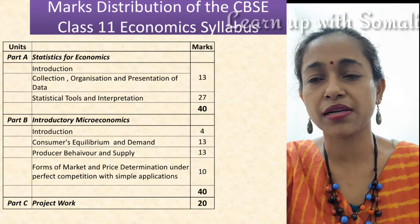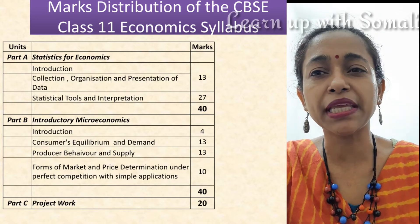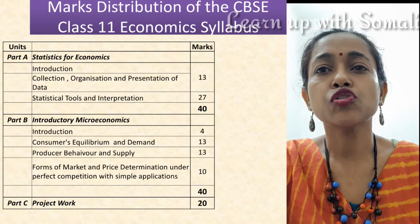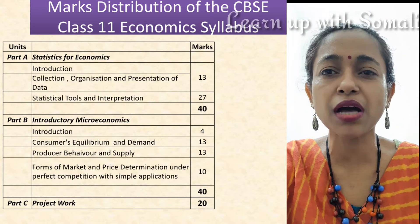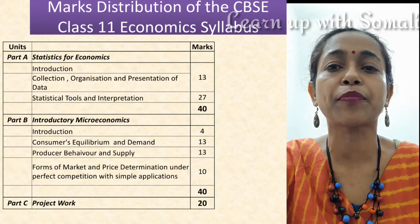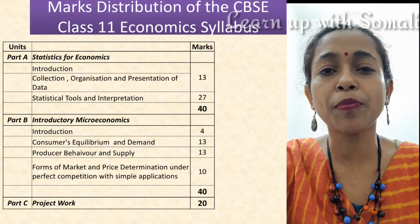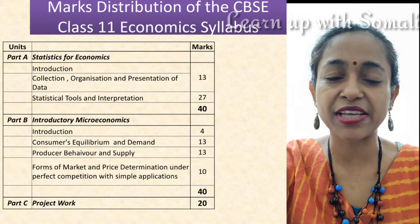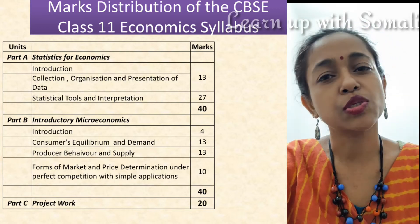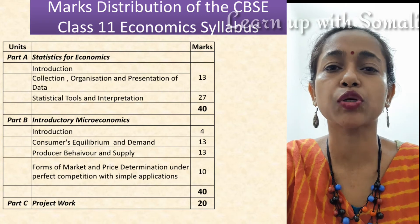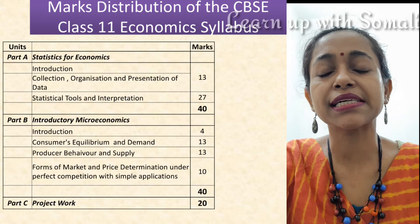Forms of Market and Price Determination carries 10 marks, so all four parts of Part B constitute 40 marks. Part A and Part B together constitute a total of 80 marks. Part C is the project work of 20 marks, divided into two parts for Summative Assessment 1 and Summative Assessment 2, giving a total of 100 marks. Now let me discuss the deleted topics which CBSE has deleted for the coming session 2021.